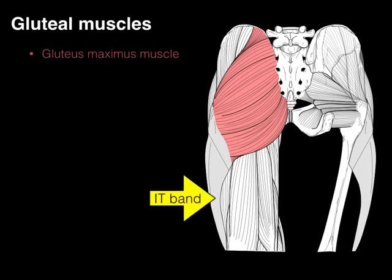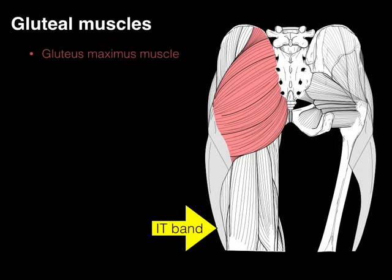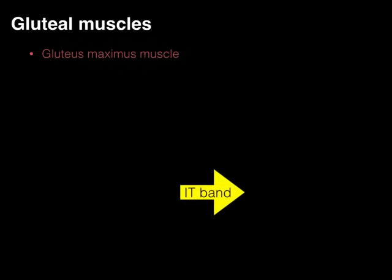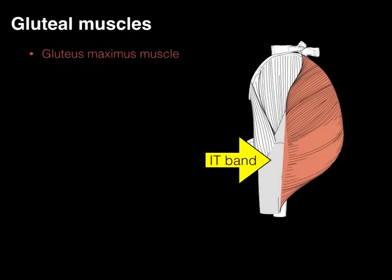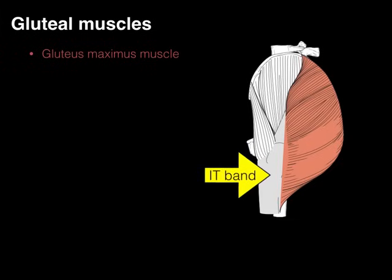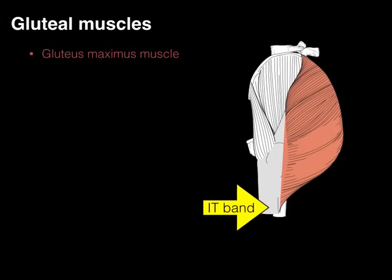The IT band courses all the way down the thigh to the tibia. In a lateral view, the IT band is shown in gray, and it courses down to the proximal part of the tibia on its lateral side.